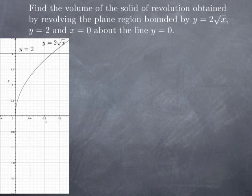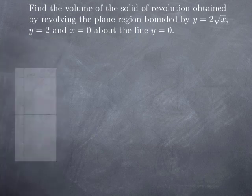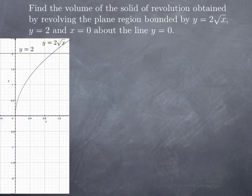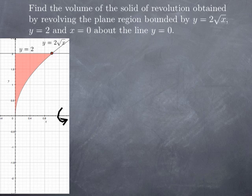Let's look at another example. This time we want to find the volume of the solid of revolution obtained by revolving the plane region bounded by y = 2√x, y = 2, and x = 0 about the line y = 0 (the x-axis). As usual, the first thing we do is sketch the plane region: y = 2√x, y = 2, and x = 0 is the y-axis. The region is bounded by the y-axis, y = 2, and y = 2√x. To find the key point, 2√x = 2 gives x = 1, so that point has coordinates (1, 2).